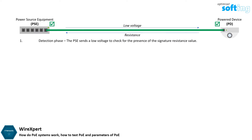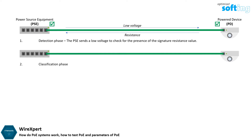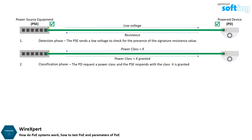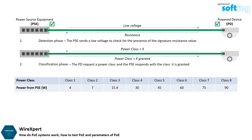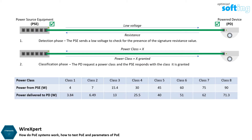The PSE will begin the classification phase if a PD is detected. During classification, the PD and PSE perform another analog handshake in which the PD requests a power class, and the PSE responds with the class the PD is granted. Class refers to the minimum power the PSE will transmit to the PD and the maximum power the PD is allowed to draw from the cable.